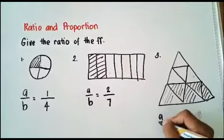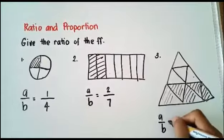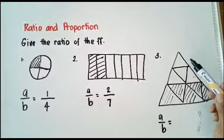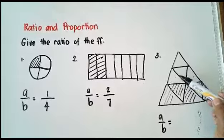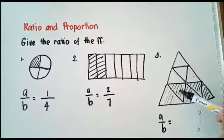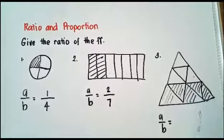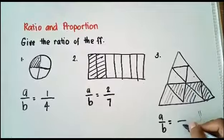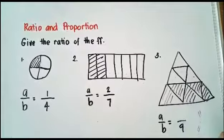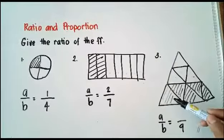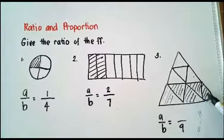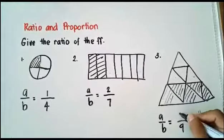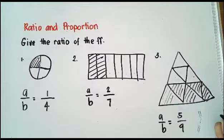For number 3, our A over B is equal to: how many parts? 1, 2, 3, 4, 5, 6, 7, 8, 9 — we have 9 divisions. And the shaded portions are: 1, 2, 3, 4, 5 — so 5. Therefore, our ratio is 5 over 9.